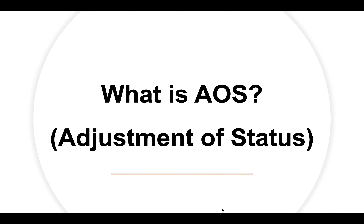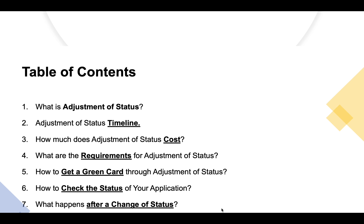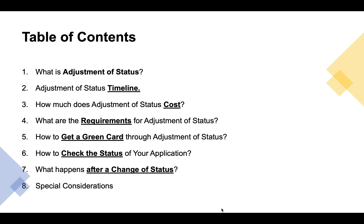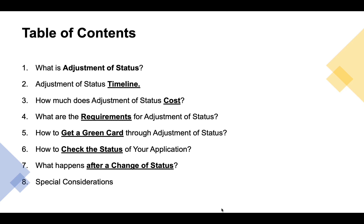Hello everyone and welcome to another presentation. In this video, we are going to learn about adjustment of status, or most commonly known as AOS. This material will cover the following: what is adjustment of status, adjustment of status timeline, how much does it cost, what are the requirements, how to get a green card through AOS, how to check your status application, what happens after a change of status, and special considerations. The source of this material's information is Boundless.com.